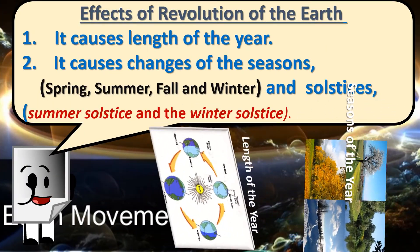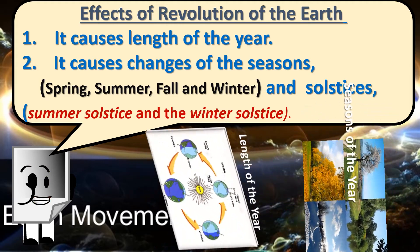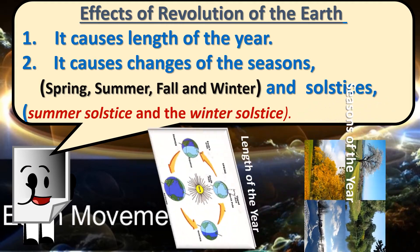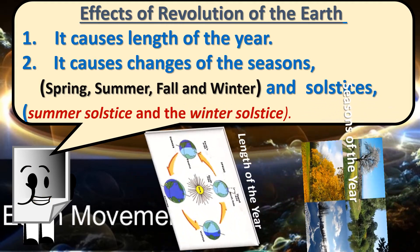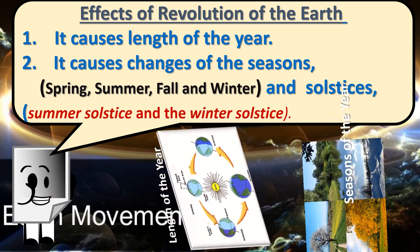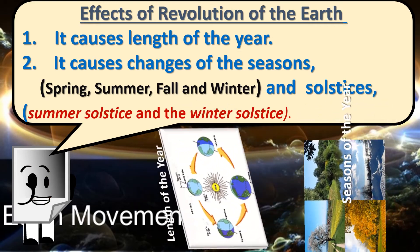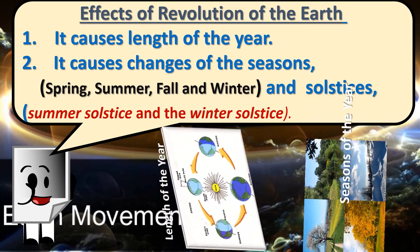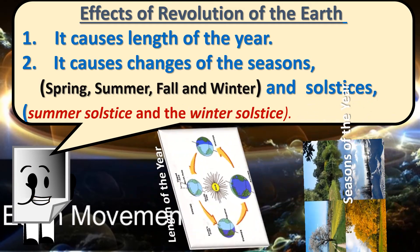Effects of Revolution of the Earth: 1. It causes changes in the length of the day. 2. It causes changes in the seasons — Spring, Summer, Fall, and Winter — and the Solstices: Summer Solstice and Winter Solstice.